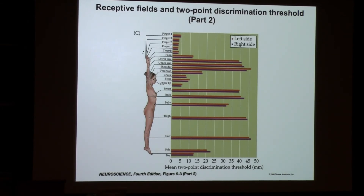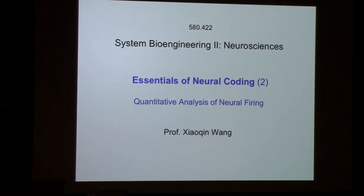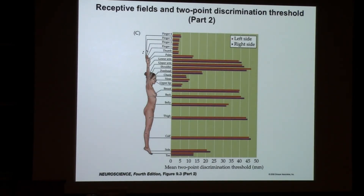That is the first part — a qualitative description of the concept of the receptive field. In coming lectures on auditory, visual, and somatosensory systems, we will apply this concept and discuss how the receptive field is constructed by the nervous system. A student asks whether the receptive field is different for other animal species. Yes, it can be very different. For example, when studying the somatosensory system of monkeys and rodents, in humans the five fingers are each finely tuned and individually represented in the brain.